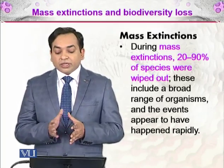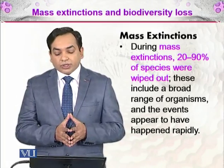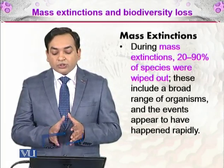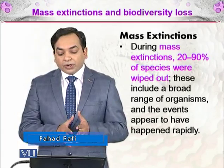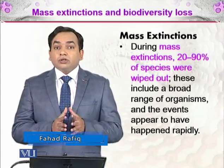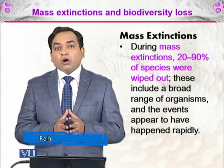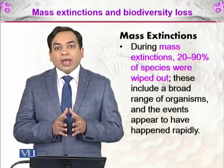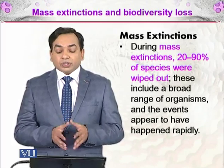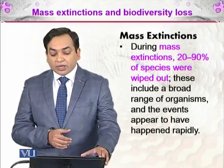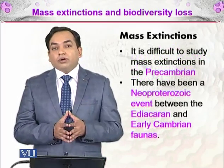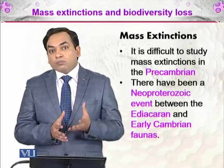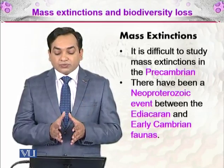During mass extinction, 20 to 90% of species were wiped out during the Earth's geological periods, and these include a broad range of organisms and events that appear to have happened rapidly. A large number of species were wiped off the surface of the Earth in a very small time frame, and we will be discussing the different periods in which these mass extinctions were happening.